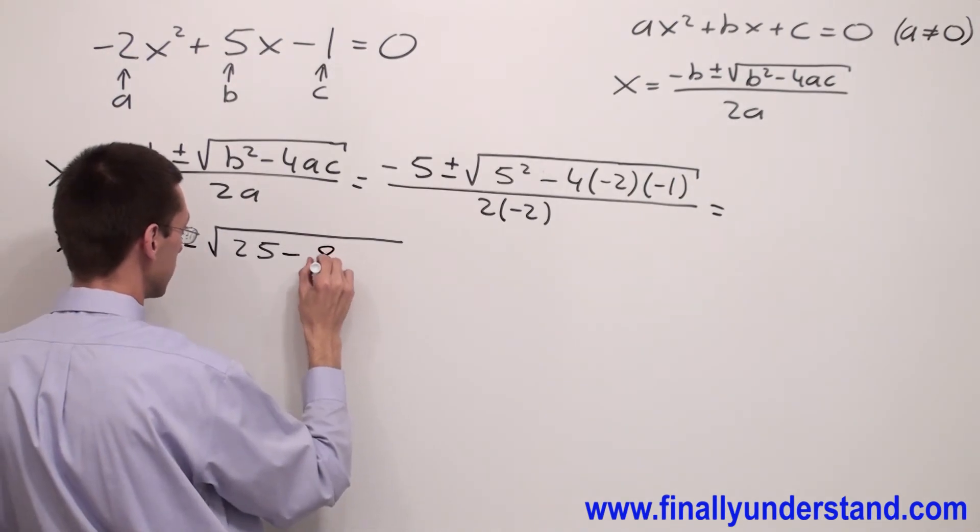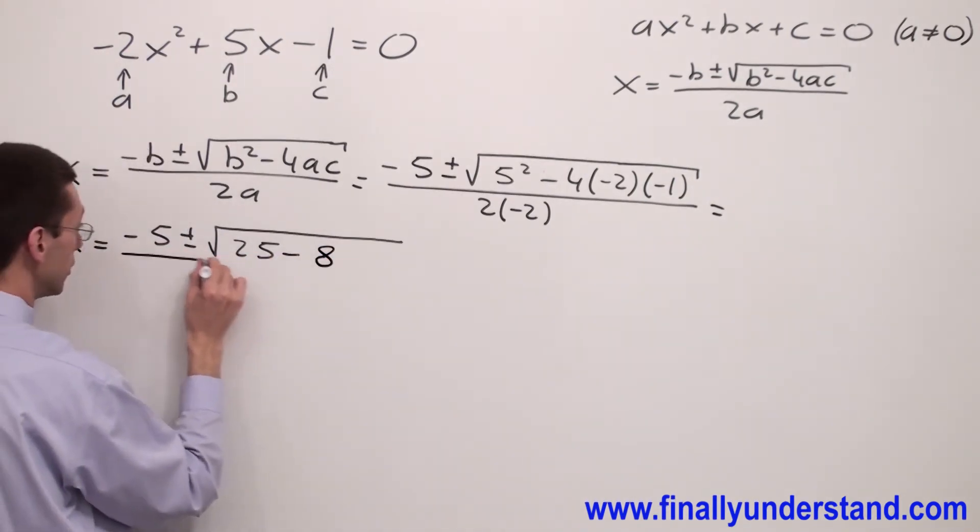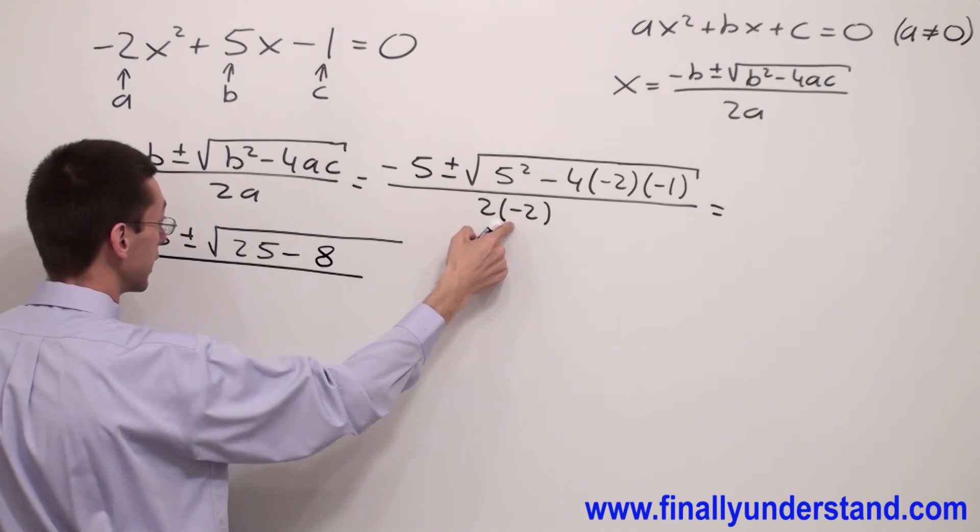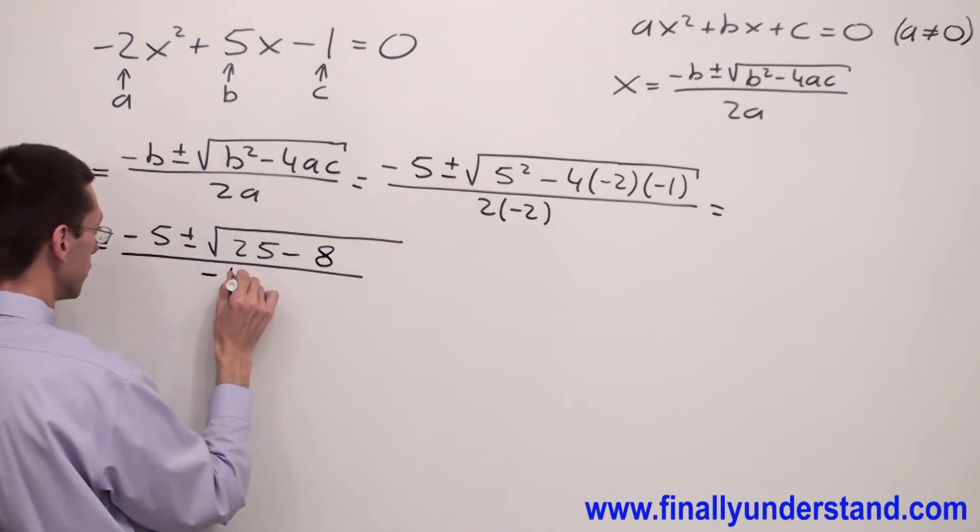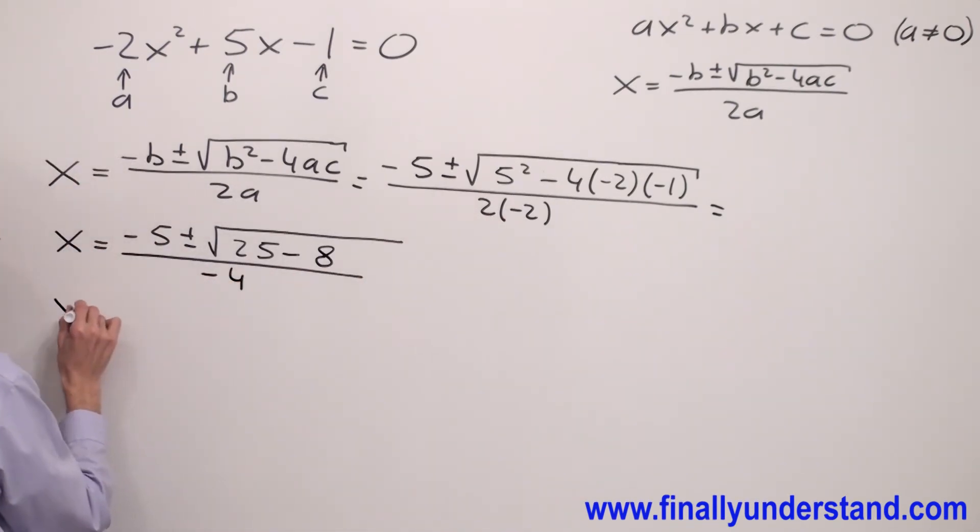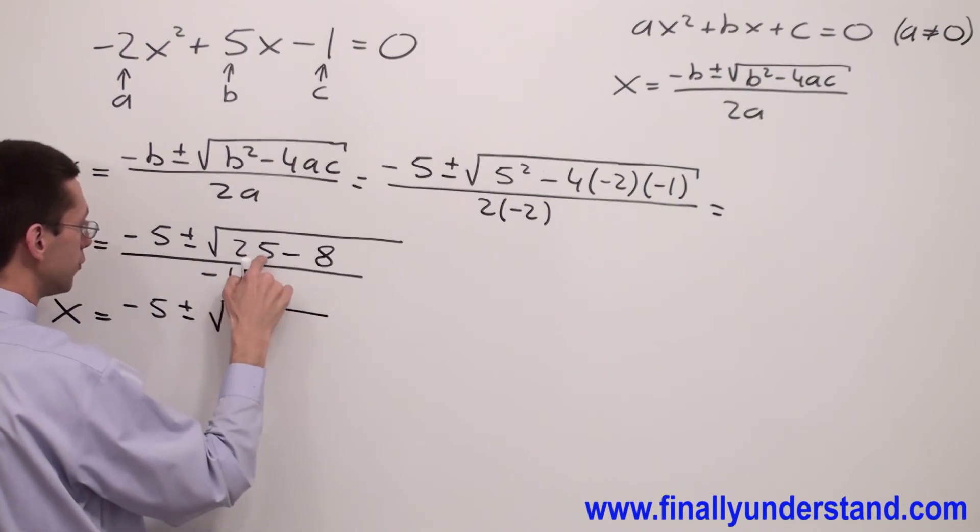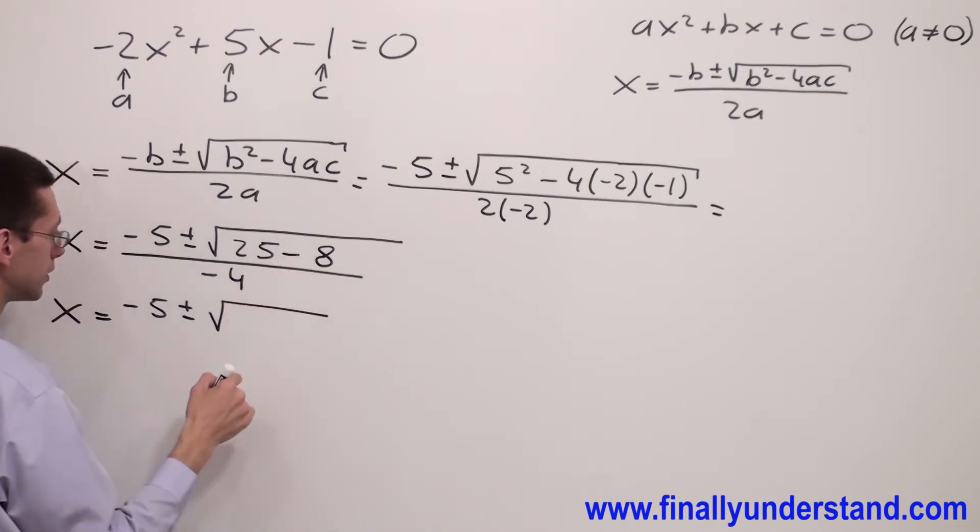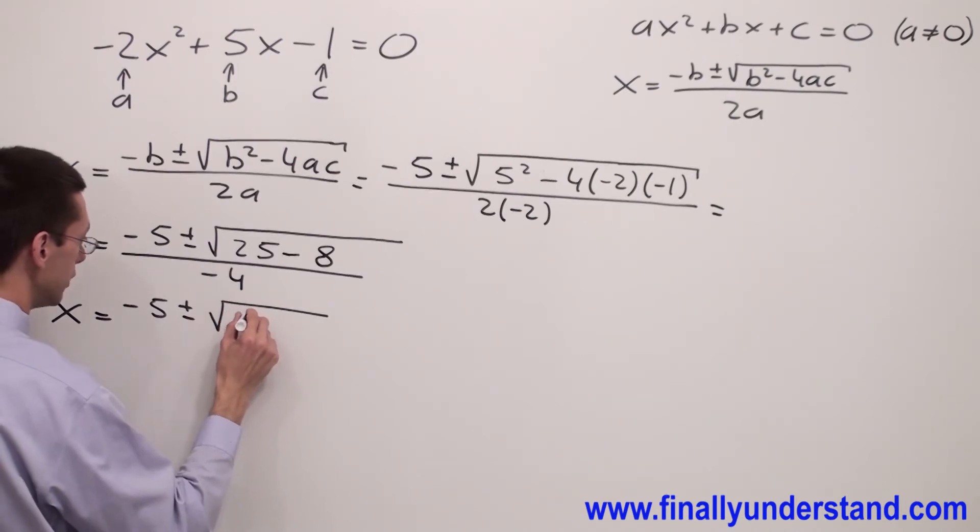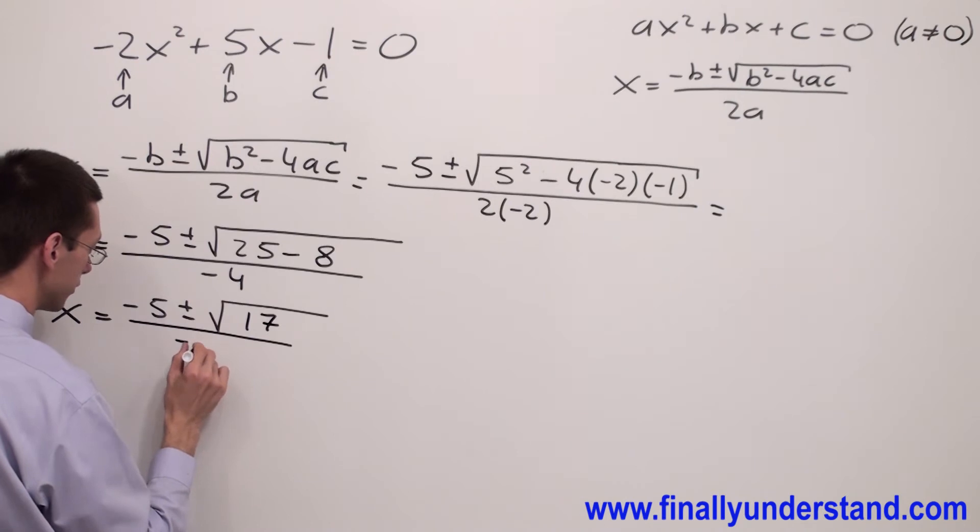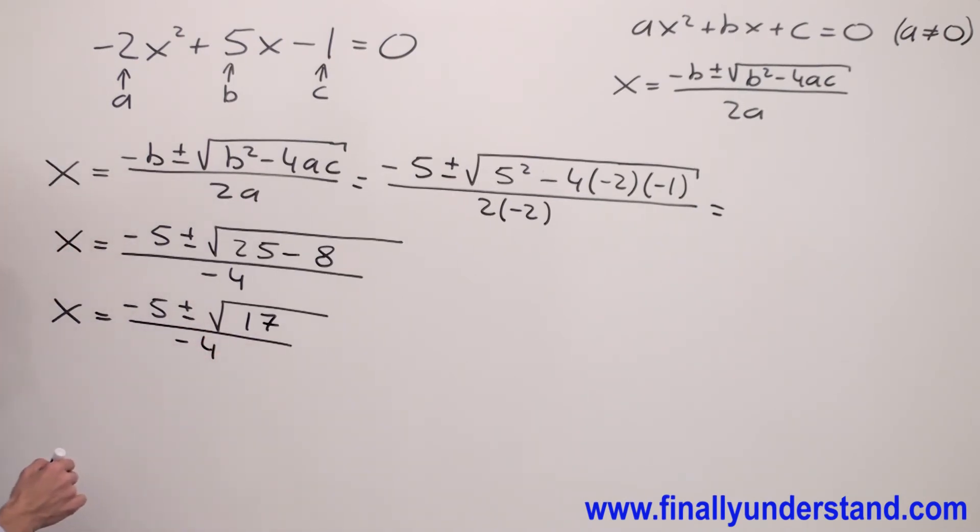So that's why I have negative 8, over 2 times negative 2 equals negative 4. So I have x equals minus 5 plus minus square root of 25 minus 8 equals 17, over negative 4.